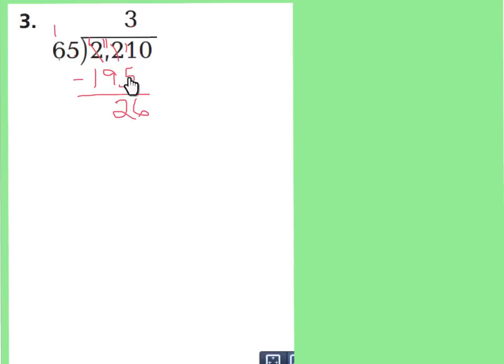We checked 26 is less than 65. We can bring down our 0 ones. Now we're doing 260 ones divided by 65. I already know 3 groups of 65 is 195, and this is 260. So I'm going to guess 1 more group of 65, making this a 4 in my quotient. 4 times 5 is 20, 4 times 6 tens is 24 tens, plus 2 more is 26 tens. That is exactly the answer. When we subtract, we have nothing left over, no remainder. So 2,210 divided by 65 is 34.